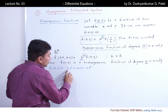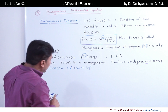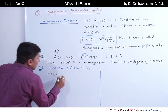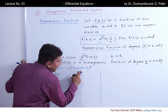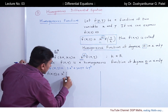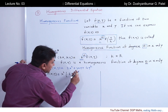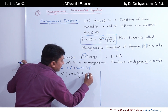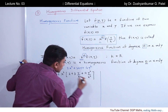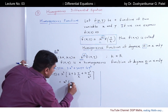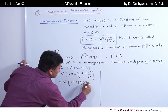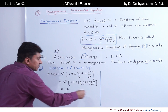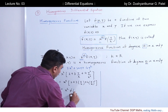Let's try an example. We have f(x,y) = 2x² + 3xy + 4y². We check both definitions. Taking x² common: f(x,y) = x² · (2 + 3·(y/x) + 4·(y/x)²). This can be written as x² · φ(y/x), where φ(y/x) = 2 + 3(y/x) + 4(y/x)². So we can say the given function f(x,y) is a homogeneous function of degree 2.